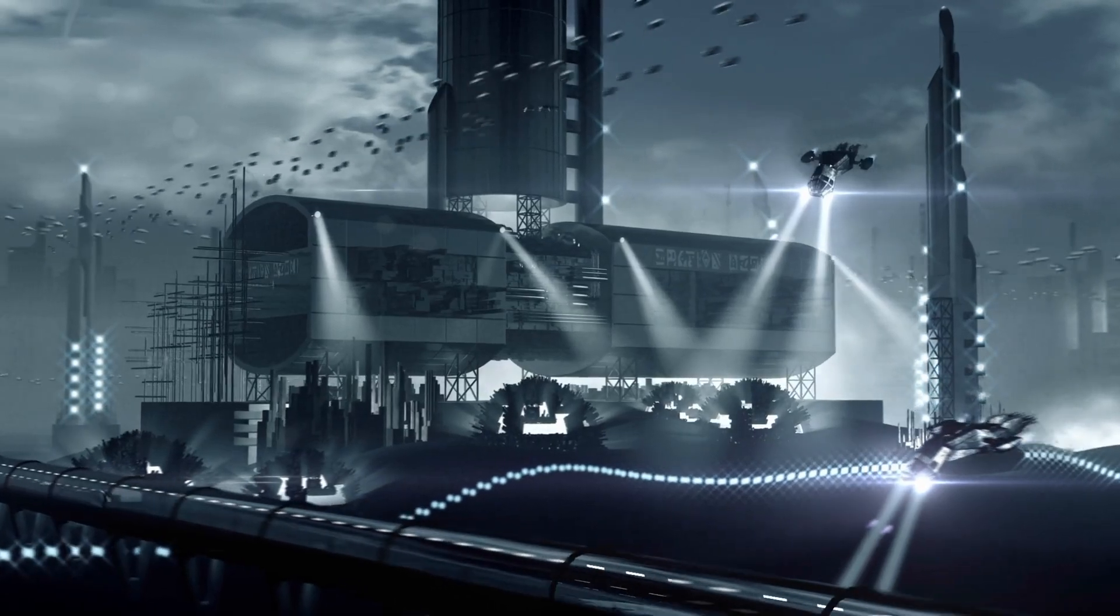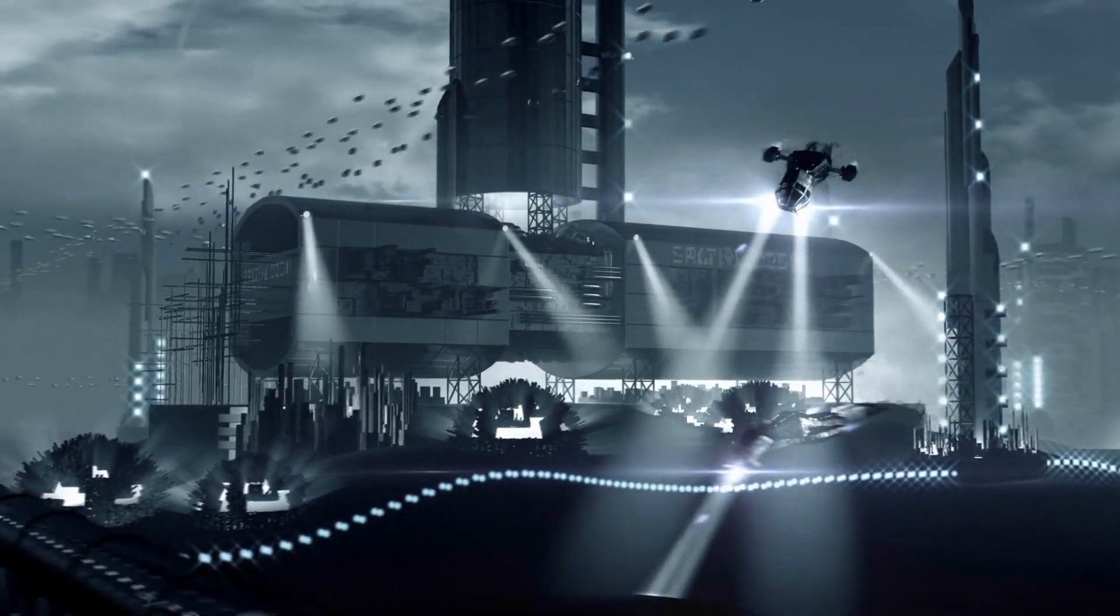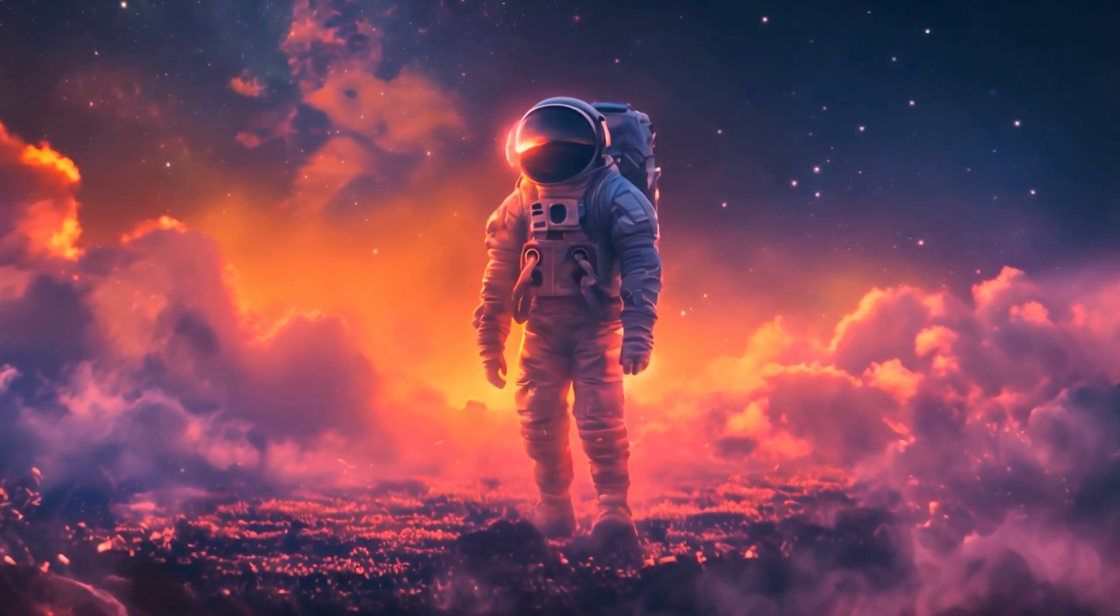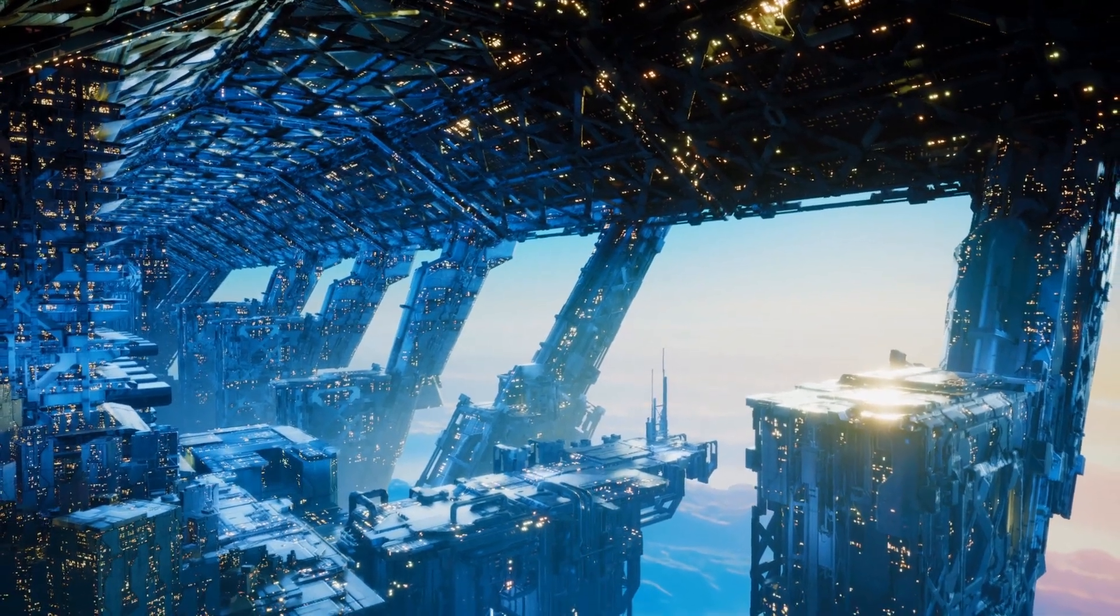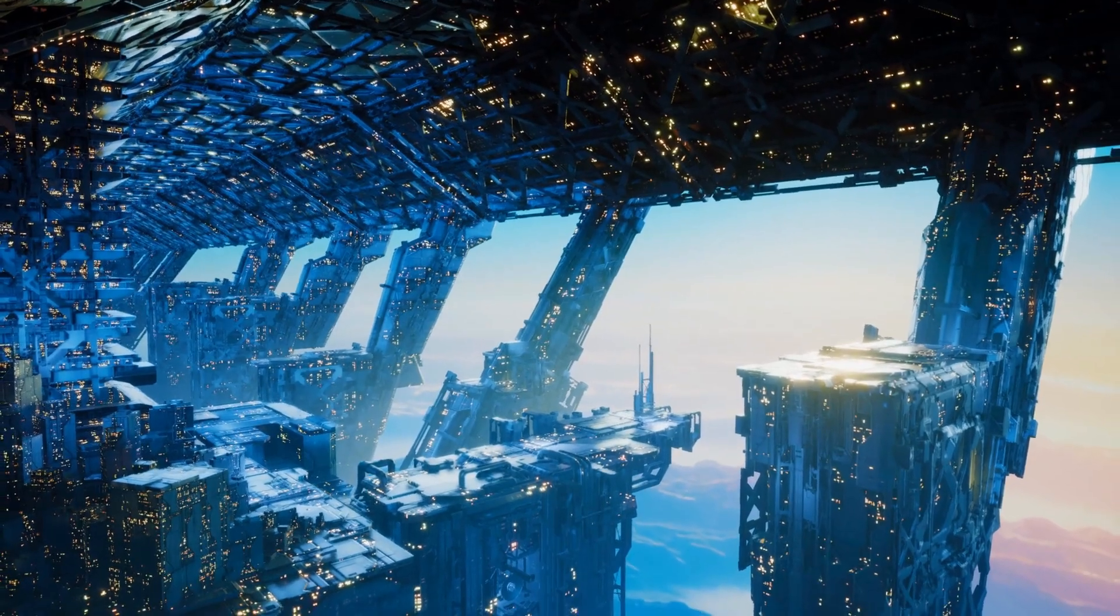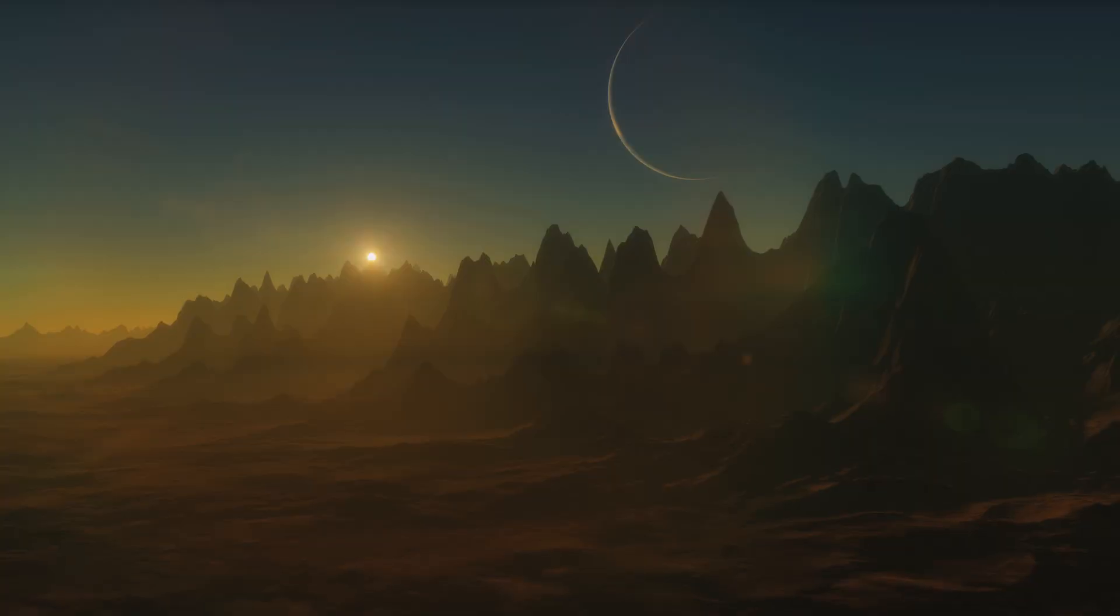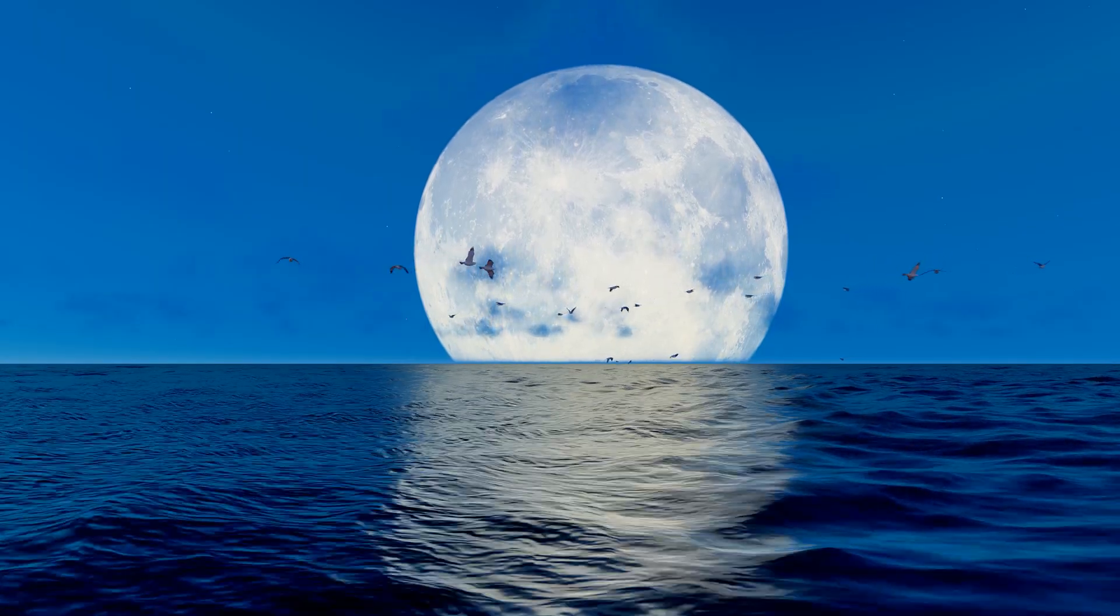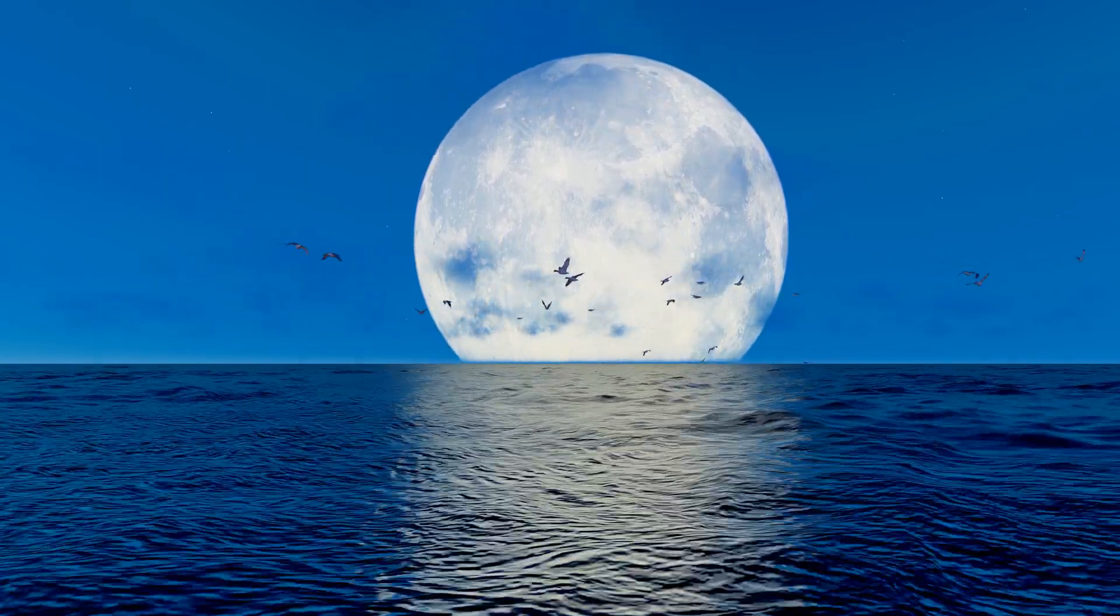So, could we eventually live on Venus? Imagine stepping out onto the surface of Venus, not in a sleek space suit, but inside a reinforced habitat floating high above its scorched, sulfuric clouds. While the surface below is a hellscape of crushing pressure, molten rock, and temperatures hot enough to melt lead, about 50 kilometers above, conditions become eerily Earth-like. The temperature cools to a livable range, and the pressure is similar to what we experience at sea level.